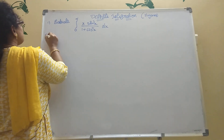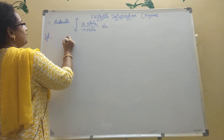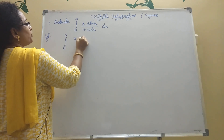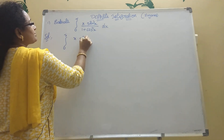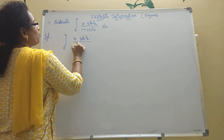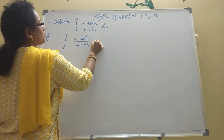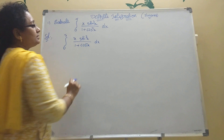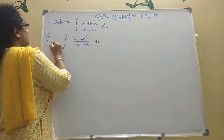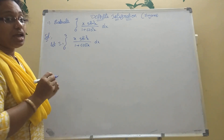Integration of 0 to π of x·sin³x by (1 + cos²x) dx. Let me take this as I — let I equal to this integral.